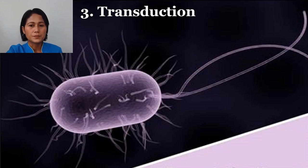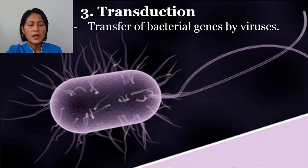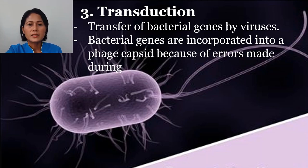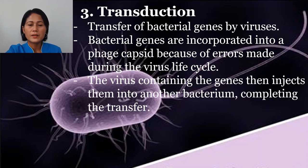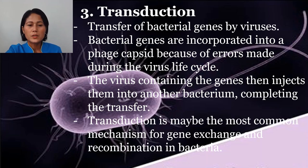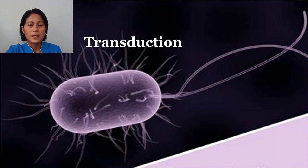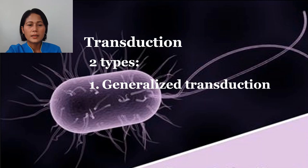Now let's go into transduction. Transduction is the transfer of bacterial genes by a virus. There is a vector or carrier involved. Bacterial genes are incorporated into a phage capsid because of errors made during the virus life cycle. The virus containing the genes then injects them into another bacterium, completing the transfer. Transduction is perhaps the most common mechanism for gene exchange and recombination in bacteria, and it can be of two types.